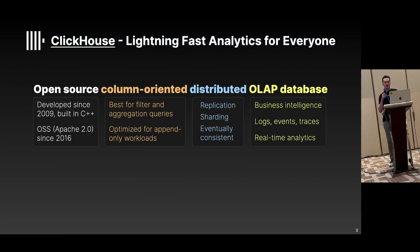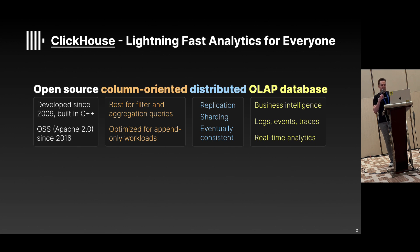Let's take a look at what ClickHouse is at a high level. ClickHouse is an open-source column-oriented distributed OLAP database. It combines industry best practices with innovation and it became hugely popular in the past years as one of the fastest analytical databases on the market. Its development started in 2009 and in 2016 the code was open-sourced.